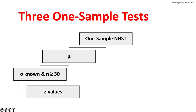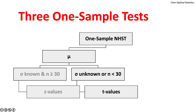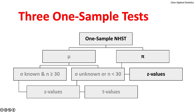There are three basic one-sample null hypothesis significance tests. The first is a z-test for the population mean when the population standard deviation is known and the sample size is greater than or equal to 30. The second is a t-test for the population mean when the population standard deviation is unknown or the sample size is less than 30. The third test is a z-test for the population proportion.